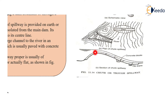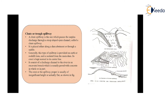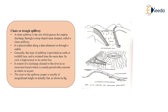The water carrying kinetic energy will not affect the bed channel, and the water will be safely carried out and passed to the downstream section. This type of spillway is one which passes the surplus discharge through a steep slope open channel called a chute spillway. Through this trough or chute, which is placed either along the dam abutments or through a saddle.